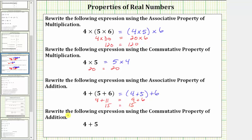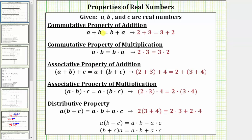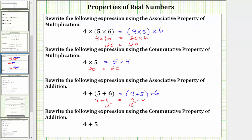And for the last example, we are asked to rewrite the following expression using the commutative property of addition. We are given the expression four plus five. The commutative property of addition is A plus B equals B plus A. It involves changing the order of a sum. Applying the commutative property of addition, four plus five equals five plus four. Notice both sums are equal to nine. I hope you found this helpful.